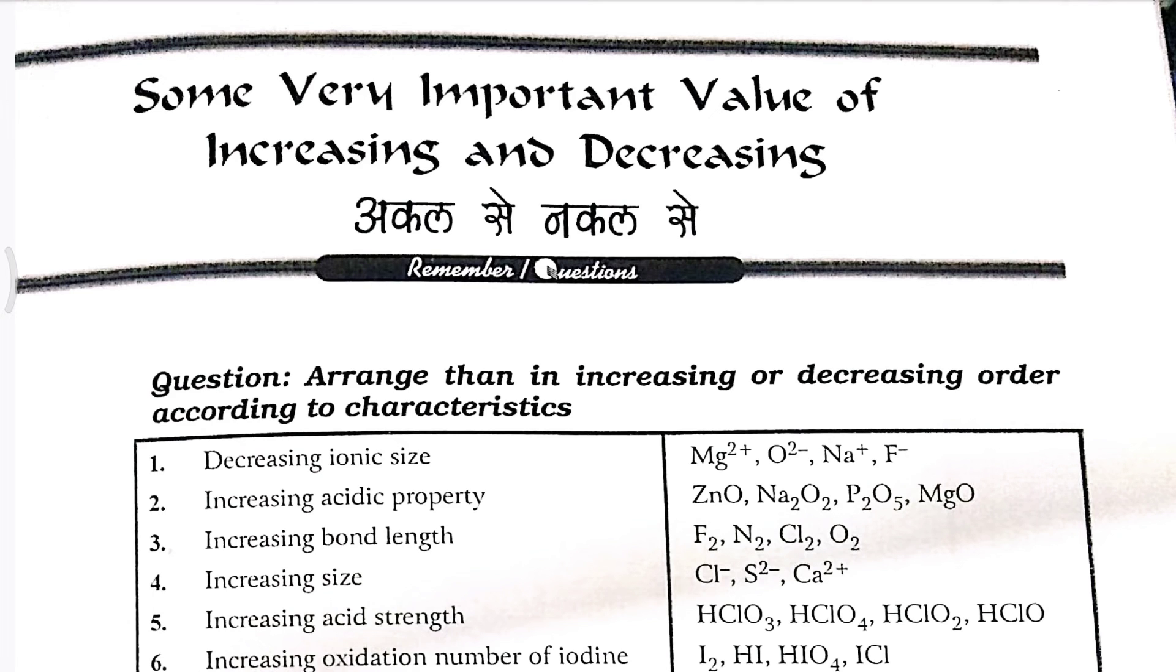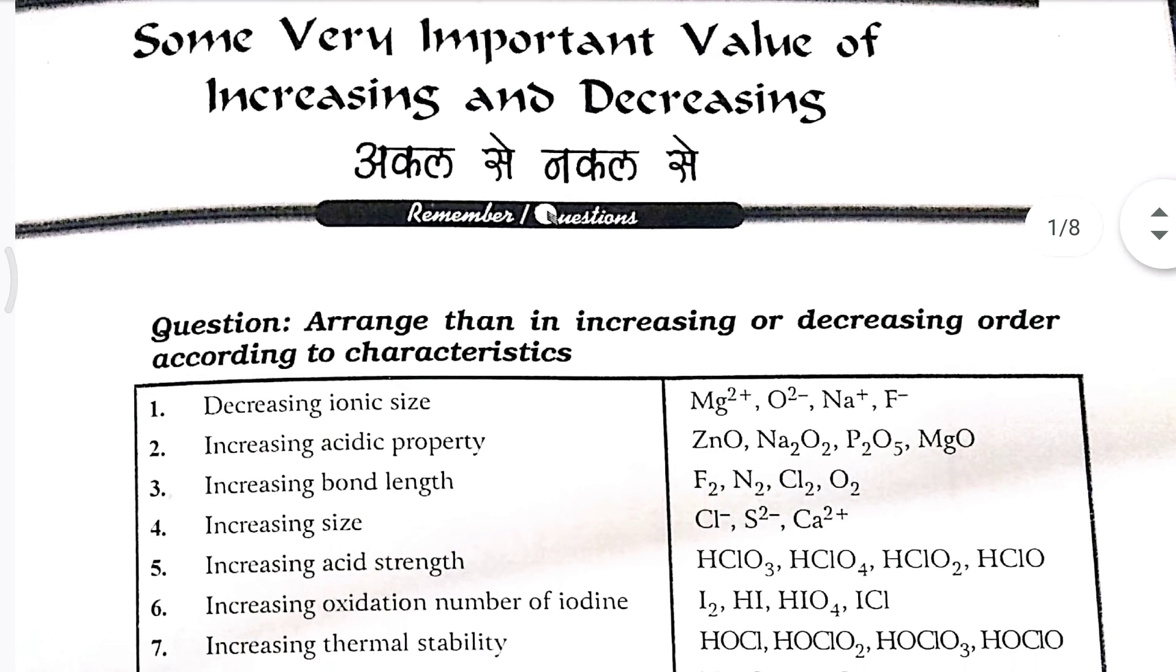So, let's talk about S block, P block, D block, F block. This is a small PDF. So, there are 75 trends.